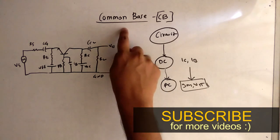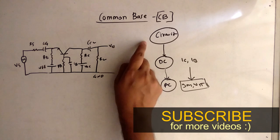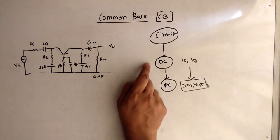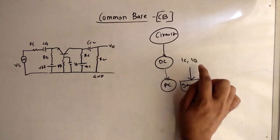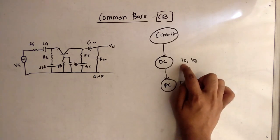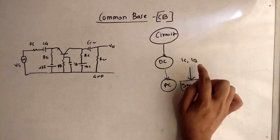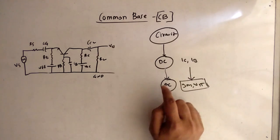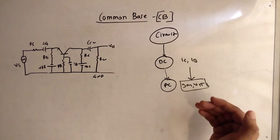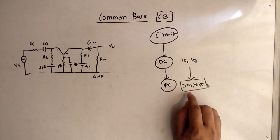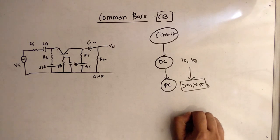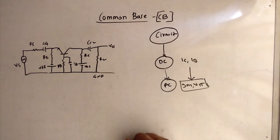Hello friends, today our topic is common base. The first step we will do is analyze the circuit of common base. Second, we will do the DC analysis so that we can find IC and IB — collector current and base current. We need IC and IB because in AC analysis we have the terms GM and Vpi from the hybrid pi model, and these terms require the base current and collector current. Let's go step by step.